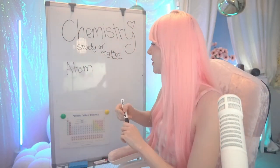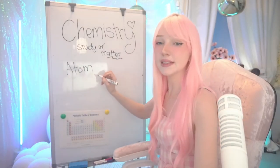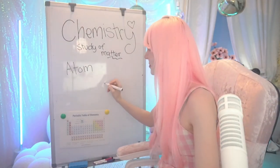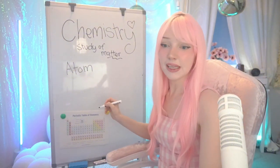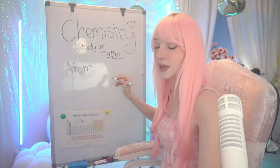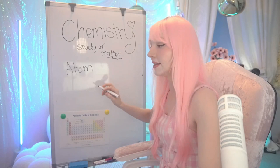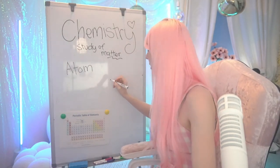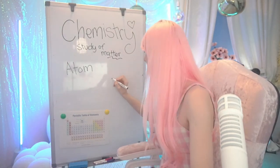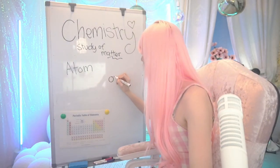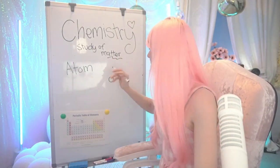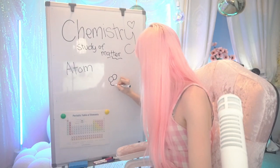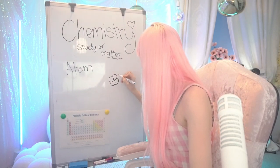Our atom is made up of — it goes deeper when we get into quantum physics — but we're just going to talk about the basic three: we've got our neutrons, our protons, and our electrons. Inside the middle of our atom we have our protons and our neutrons.